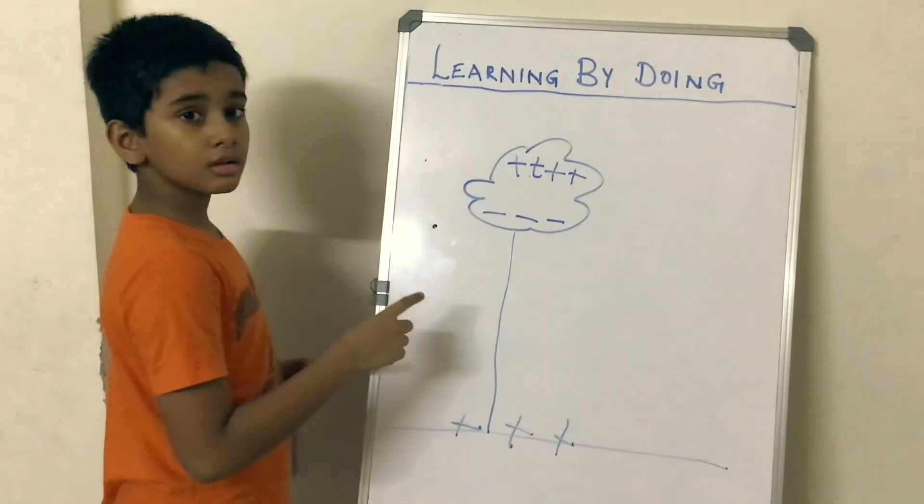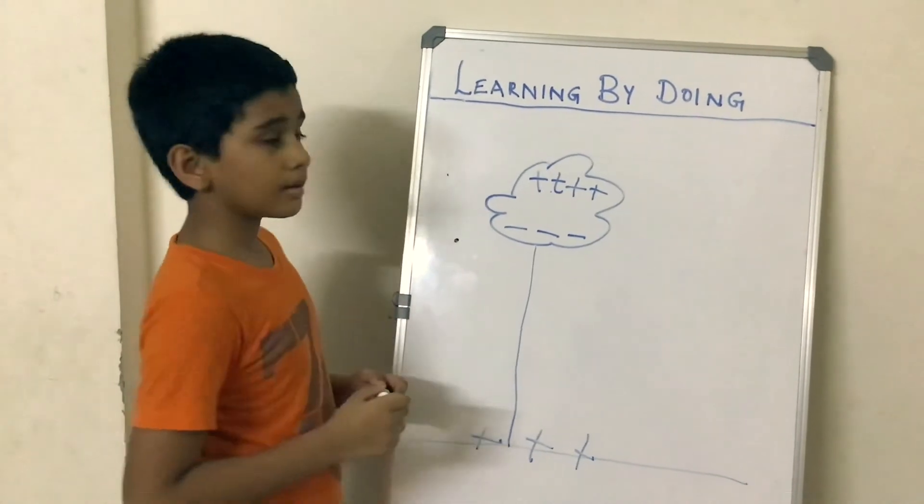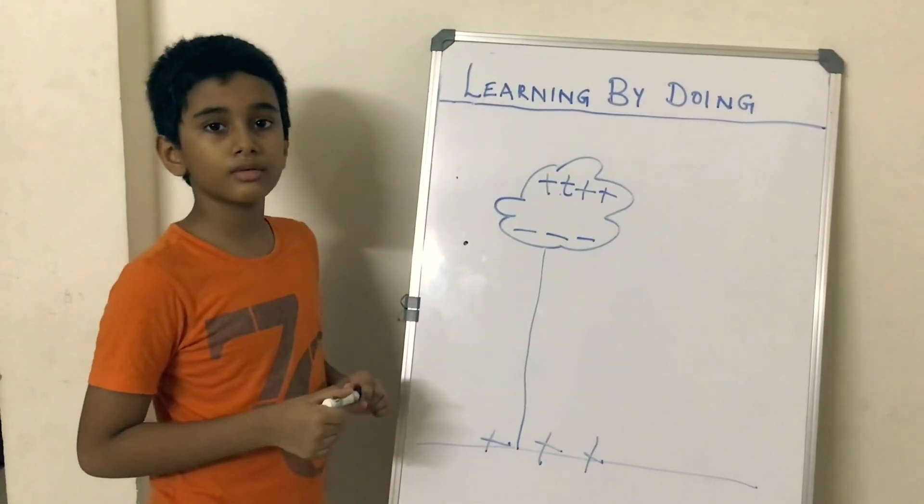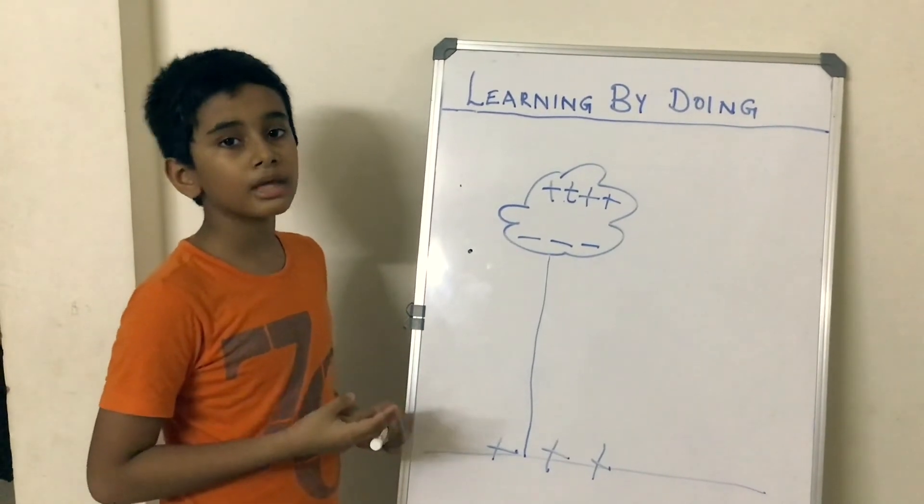So this is what you can see as lightning. Lightning is very destructive. It can strike many things like buildings, trees, and even people.